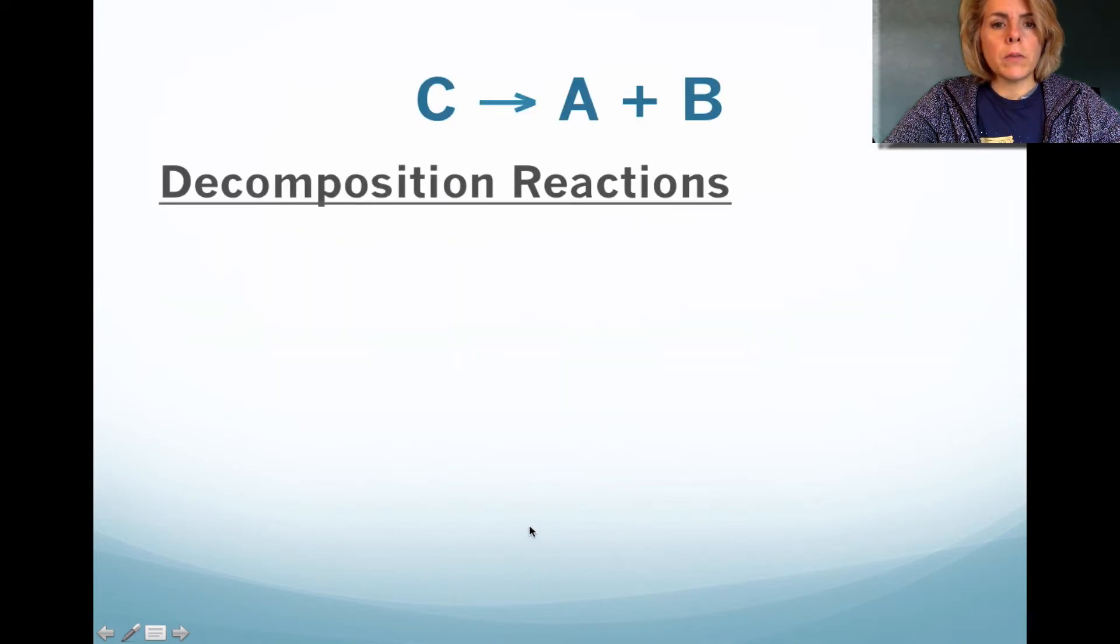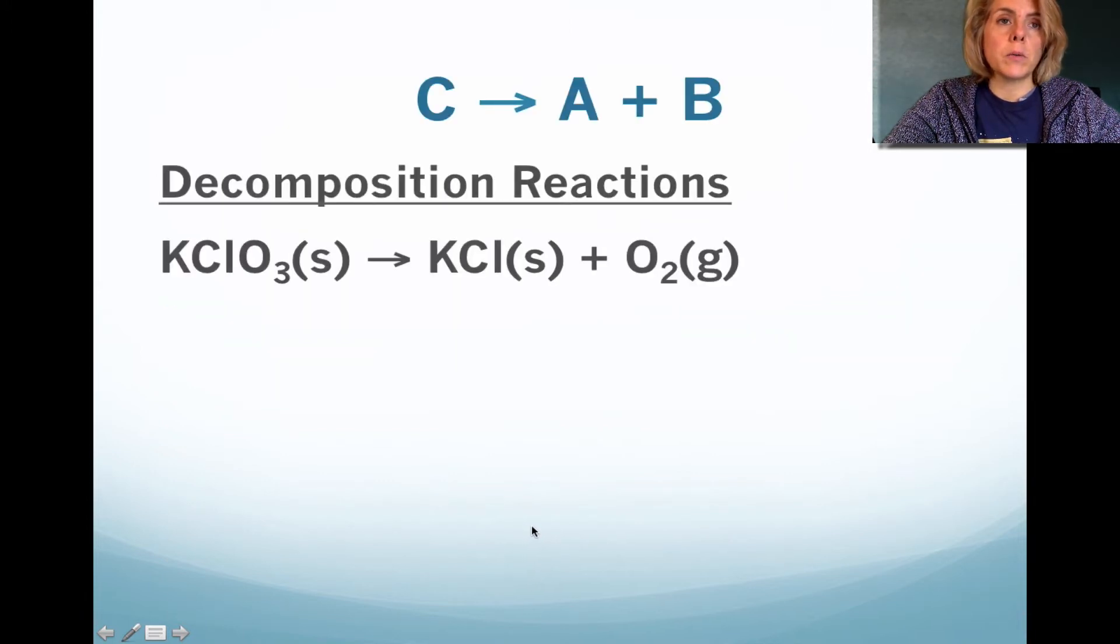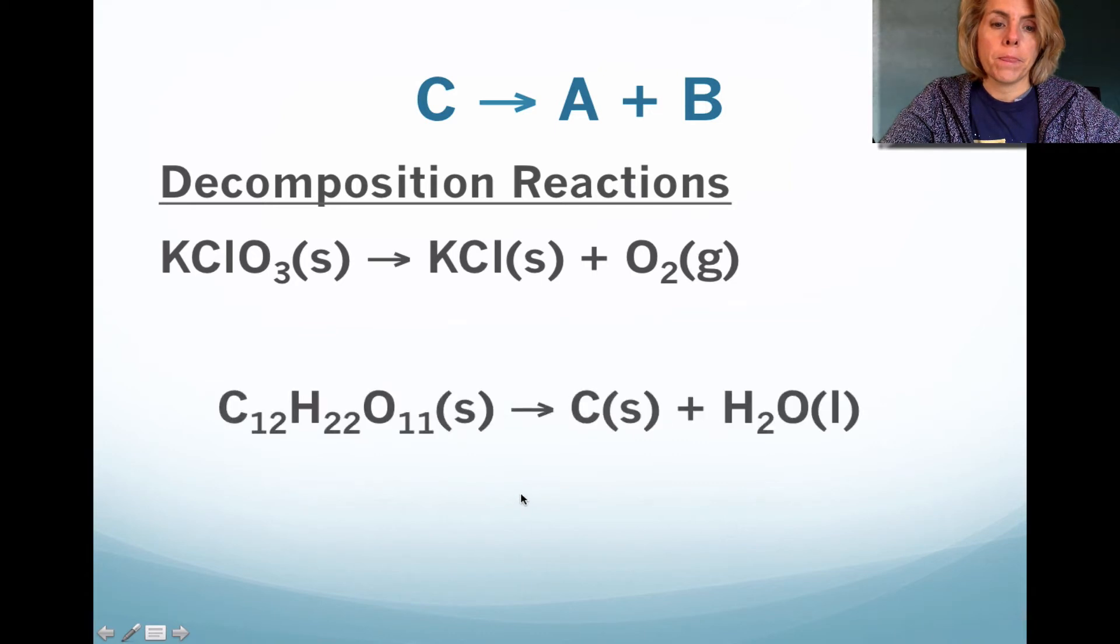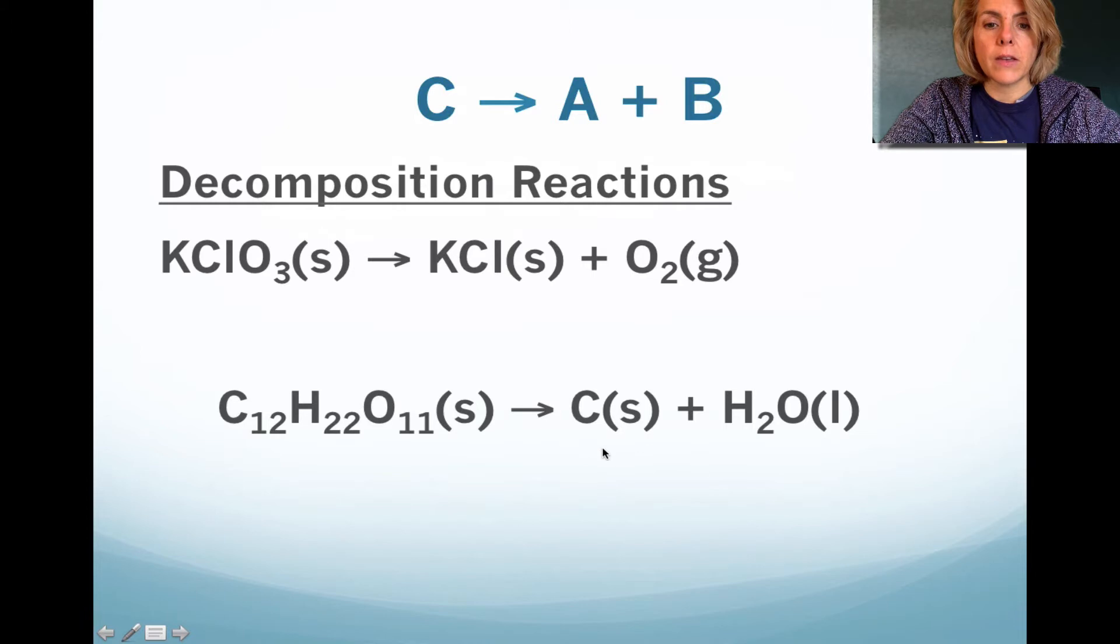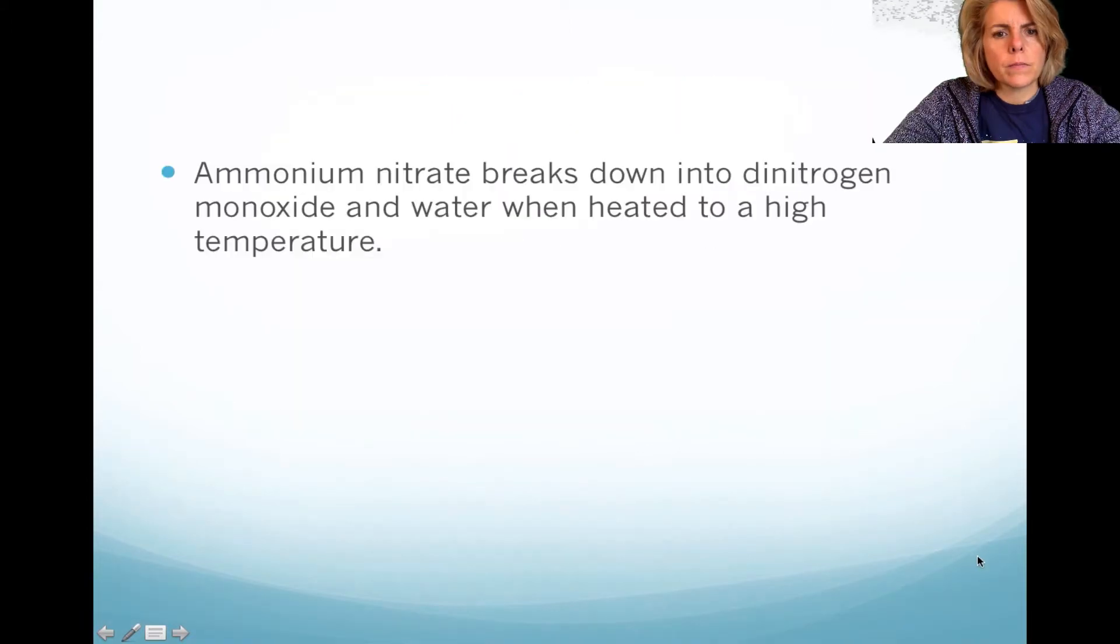An example of this would be potassium chlorate. You've actually done this in the lab, where you heated up potassium chlorate in an evaporating dish, and you got potassium chloride, and oxygen was bubbling from the system. And then here we have sugar that, if we heated it, we could just get carbon by itself and water.